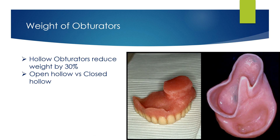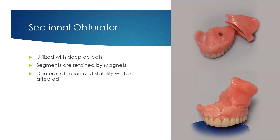The weight of the definitive obturator can be reduced by 30% by hollowing out the bulb of the obturator. The bulb can be left open or closed by a lid. An open obturator will lead to food and mucus accumulation inside the bulb. Sectional obturators can be utilized with deep defects; the segments are retained by magnets, but denture retention and stability will be affected.